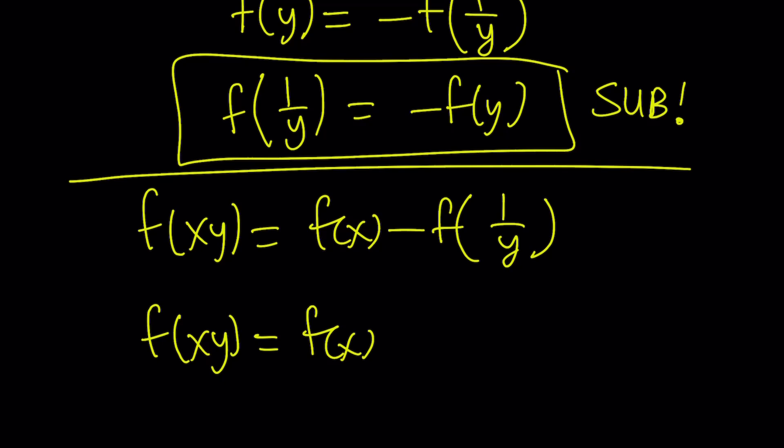And since that's a negative, it's going to be like a double negative. Since it's not English, it's just going to be a positive, right? So this gives us something very interesting. f of xy equals f of x plus f of y. Yay!